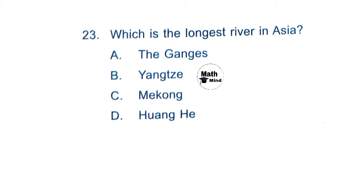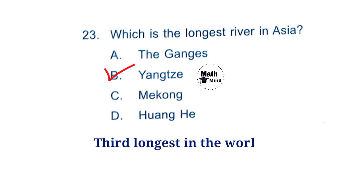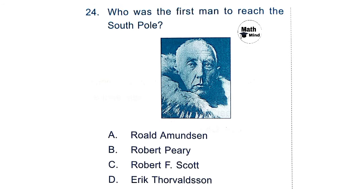Question 23: Which is the longest river in Asia? Option B is correct: Yangtze. It is the longest river in Asia and the third longest in the world, with a length of 6300 km. Question 24: Who was the first man to reach the South Pole? Option A is correct: Roald Amundsen.